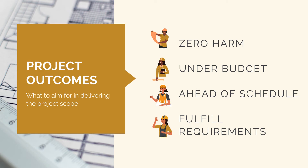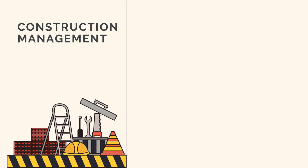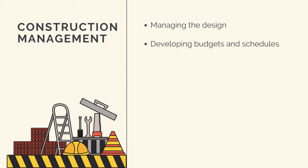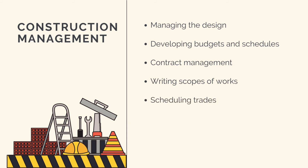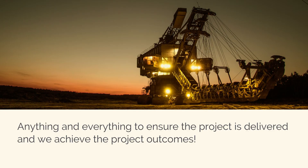What does this mean in practice? What do construction managers actually do? Well, there's no quick answer to that question — they do a lot. As construction managers, we'll need to manage the development of the design drawings that tell us what to build, develop budgets and schedules, develop and manage contracts, write scopes of work and procure subcontractors, schedule trades and resources, manage risks, and communicate with stakeholders. Construction management is a diverse job, and we'll need to do pretty much anything and everything to ensure the project is delivered to achieve the project outcomes.